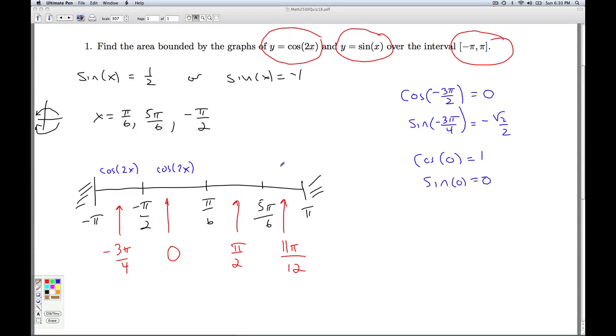Let's plug in pi over 2. The cosine of 2 times pi over 2 is the cosine of pi, which is negative 1. The sine of pi over 2, on the other hand, is positive 1. So sine of x is now what's on top.